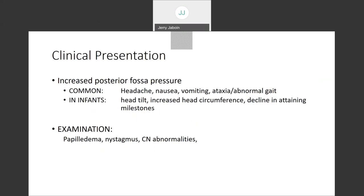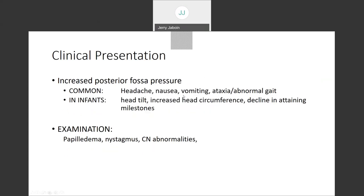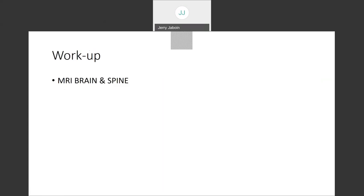This tumor arises in the posterior fossa with high potential for CSF dissemination — about 30% of patients historically have CSF involvement or M-positive disease at diagnosis. Clinical presentation relates to location: a posterior fossa mass causes increased posterior fossa pressure manifesting as headache, nausea, vomiting, gait, and ataxia. For infants, you might notice head tilt, increasing head circumference, and decline in developmental milestones. On examination: papilledema, nystagmus, and cranial nerve abnormalities.